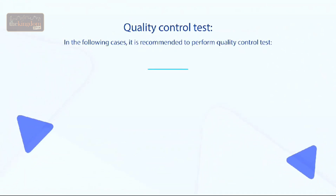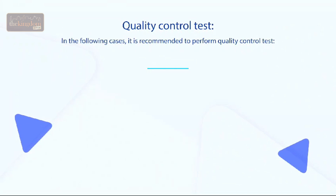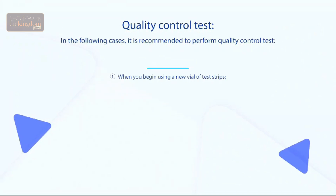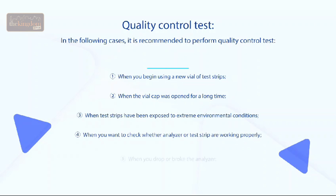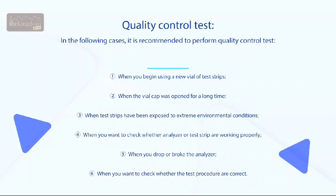Quality Control Test: In the following cases, it is recommended to perform a quality control test: 1. When you begin using a new vial of test strips. 2. When the vial cap is open for a long time. 3. When test strips have been exposed to extreme environmental conditions. 4. When you want to check whether the analyzer or test strip are working properly. 5. When you drop or broke the analyzer. 6. When you want to check whether the test procedure is correct.